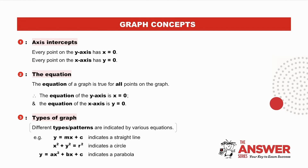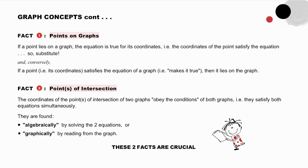Types or shapes: each graph has its own standard equation indicating its shape — y equals mx plus c is a straight line; x² plus y² equals r² is a circle; y equals ax² plus bx plus c is a parabola, and so on. Points on graphs: if a point lies on a graph, the equation is true for its coordinates — so substitute. And conversely, if a point satisfies the equation of a graph, then it does lie on the graph. Points of intersection: the coordinates of the points of intersection of two graphs satisfy both equations simultaneously, and are found either algebraically by solving the two equations, or graphically by reading from the graph.